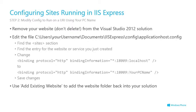First, remove your website from the Visual Studio 2012 solution. Then go to your My Documents folder, find the IIS Express subfolder, drill down to config, and find applicationhost.config. Every time you create a website in Visual Studio it puts a new entry there. Find your site — there's a binding line showing binding information with the port number and 'localhost'. You need to edit that and replace 'localhost' with the real name of your PC.